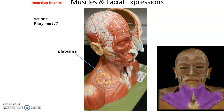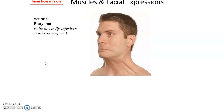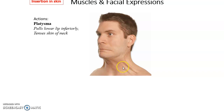The platysma is a thin sheet of muscle that goes from the shoulder all the way up into the lower part of the face — there are two, one on each side. When it contracts, it causes a pulling down of the lips and creates tension in the skin of the neck.